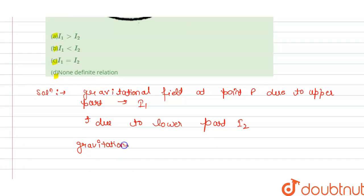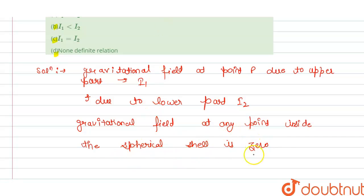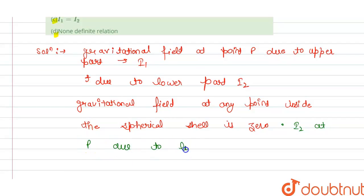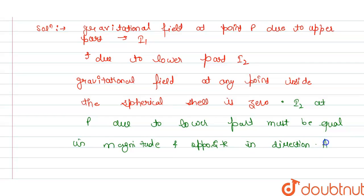We know that the gravitational field at any point inside a spherical shell is zero. From this we can say that the gravitational field due to the lower part, i2, at point P must be equal in magnitude and opposite in direction to i1.